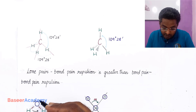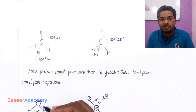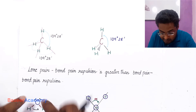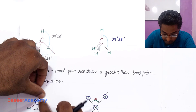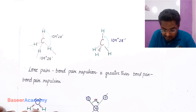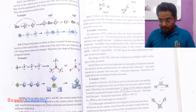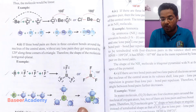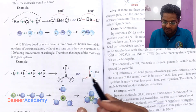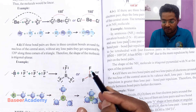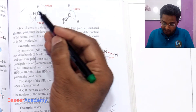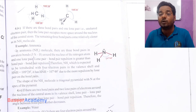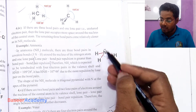The bond angle decreases when there are lone pairs because the repulsion between a lone pair and a bond pair is greater than the repulsion between bond pair and bond pair. So the angle gets decreased. Once again: two bonds, no lone pairs → 180°; three bonds, no lone pairs → 120°; four bonds, no lone pairs → 109°28'.